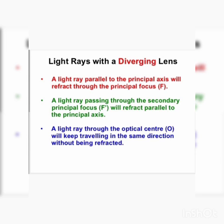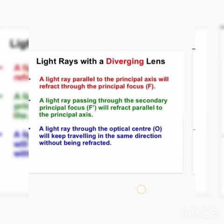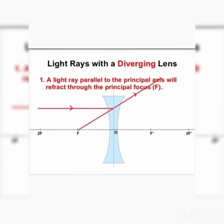These are the three cases. Remember that in the convex lens case we also discussed these same three cases — what happens when light passes through each of these situations. Now let's move to the first case: a light ray parallel to the principal axis will diverge through the principal focus.